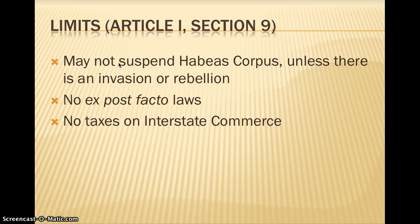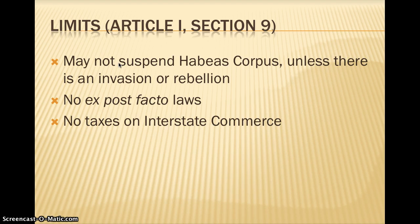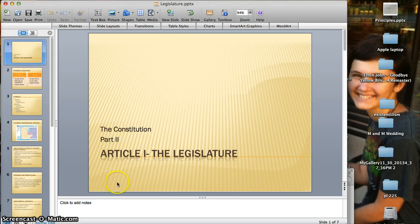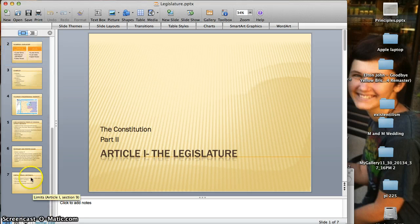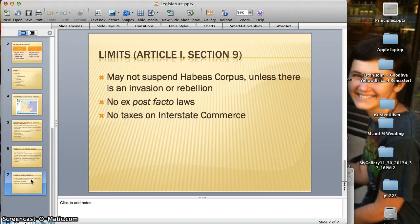There are limits as well on the kinds of laws Congress can make. Congress cannot suspend habeas corpus — the writ of habeas corpus requires that if you're held by the government you need to be charged with or made aware of the charges — unless there is an invasion or rebellion. The only time habeas corpus has been suspended in the United States was during the Civil War under Lincoln. There can be no ex post facto laws, meaning you can't pass a law saying something that happened before the law was passed is illegal. Also, no taxes on interstate commerce — so if something is manufactured in Colorado, Congress can't tax it moving into Utah or Nebraska. These are the general powers of Congress, and next we'll look at the executive power.